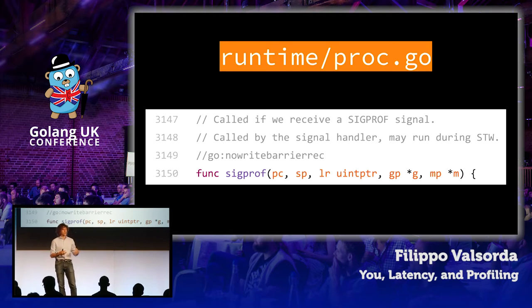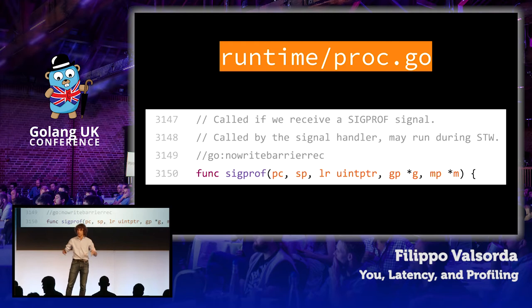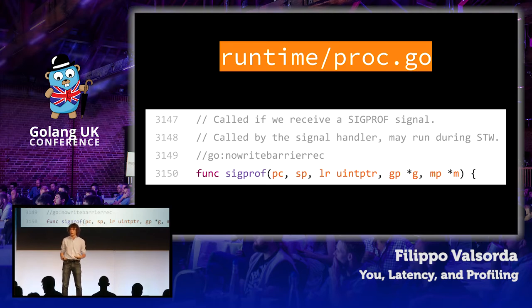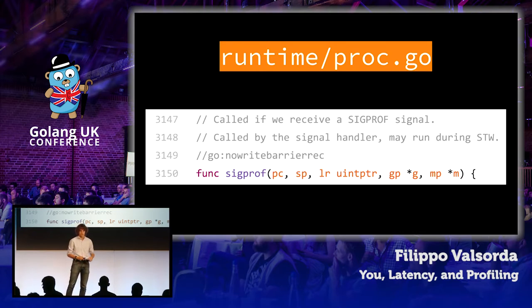You can control that period to have more fine-grained or coarser sampling, with a lower performance cost, using the runtime package — specifically runtime.SetCPUProfileRate.